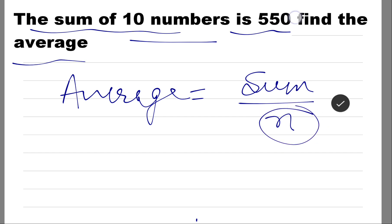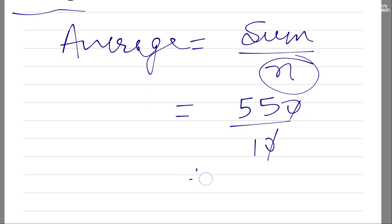So basically there are 10 numbers, so n will be 10. Sum is 550, so you just need to put the values here: 550 upon 10, so you will get 55.